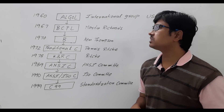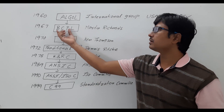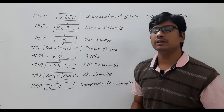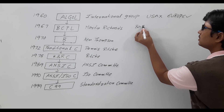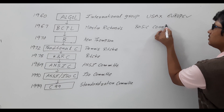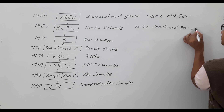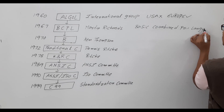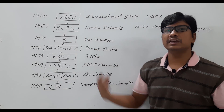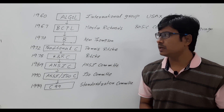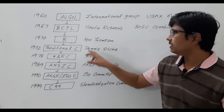Then in 1967, Martin Richards developed a programming language called BCPL, which stands for Basic Combined Programming Language. This language was developed specifically to design system software.